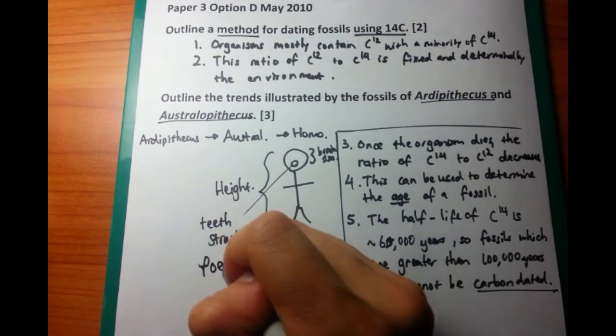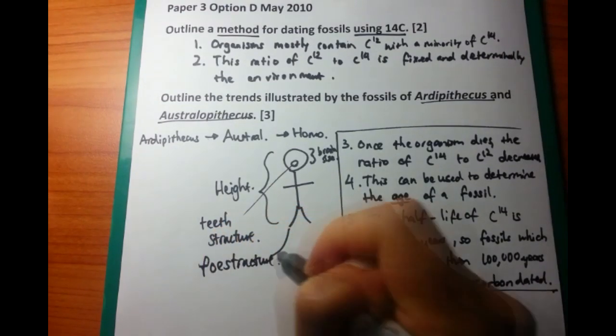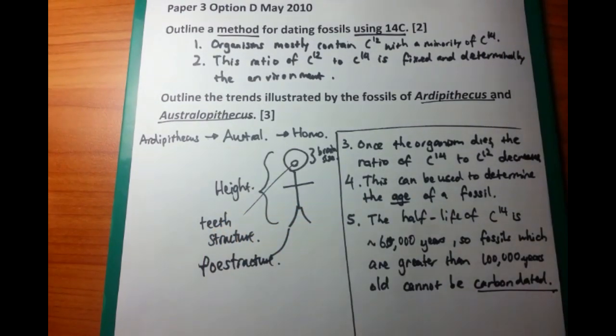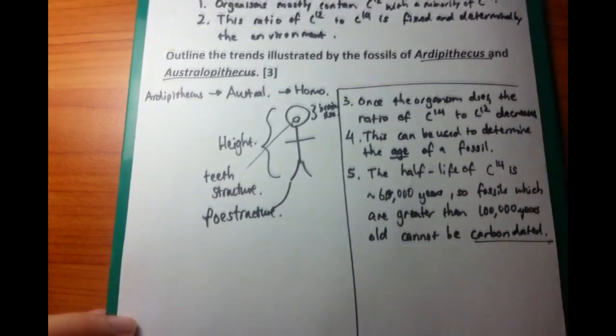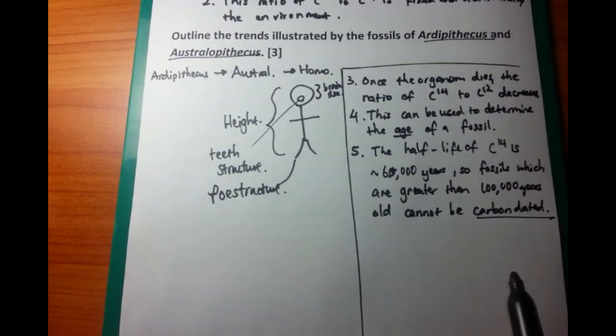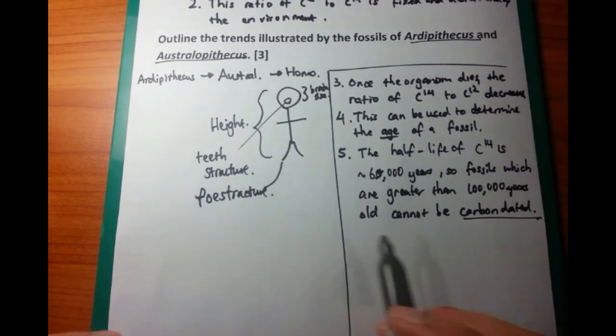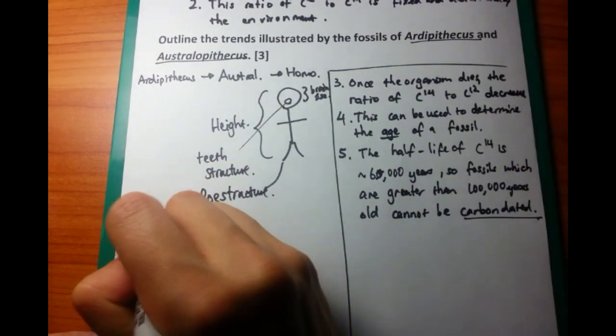So let's look at the first point, which is we're going to talk about its height. So from Ardipithecus to Australopithecus, you have an increasing height, because you have Australopithecus being taller than the previous one.